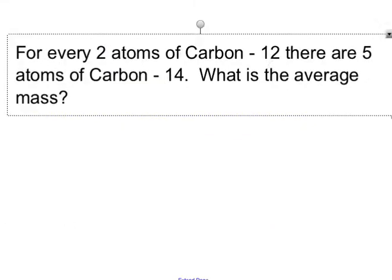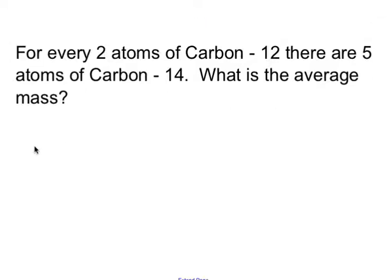Now we're going to try solving it a slightly different way. Could I use percentages with this problem right here? For every two atoms of Carbon-12, there are five atoms of Carbon-14. What is the average mass? We can't use the exact same formula as before, so we're going to try something a little bit different. What happens here is we're going to take the top part, the two atoms, and figure out how many total there are. For example, if you're going to find out your test score, you take the number right divided by the total number. We want to find out what percentage are these two atoms of Carbon-12 of all the carbon atoms. So we're going to take 2 and divide that by 7.